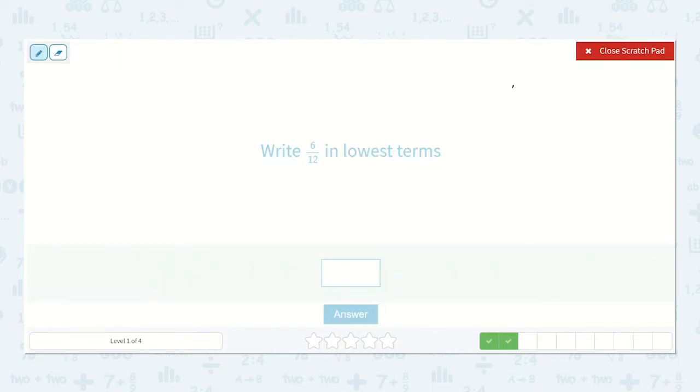All right, we have 6 twelfths. Do you remember what the greatest common factor between these two numbers was? We have 6, so we can divide the top and bottom by 6. 6 divided by 6 is 1. 12 divided by 6 is 2. So 6 twelfths is equivalent to 1 half.